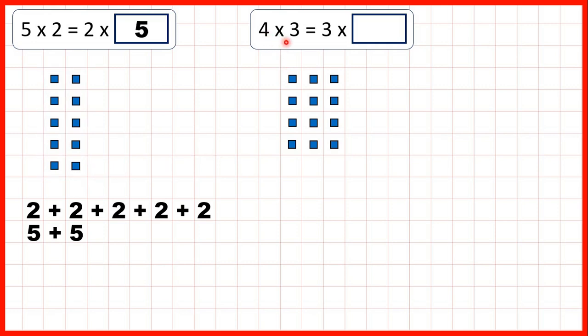Here, 4 times 3 is 12, and that's the same as 3 times 4. With our array, we can look at it this way, with 4 groups of 3, because 3 plus 3 plus 3 plus 3 is 12.